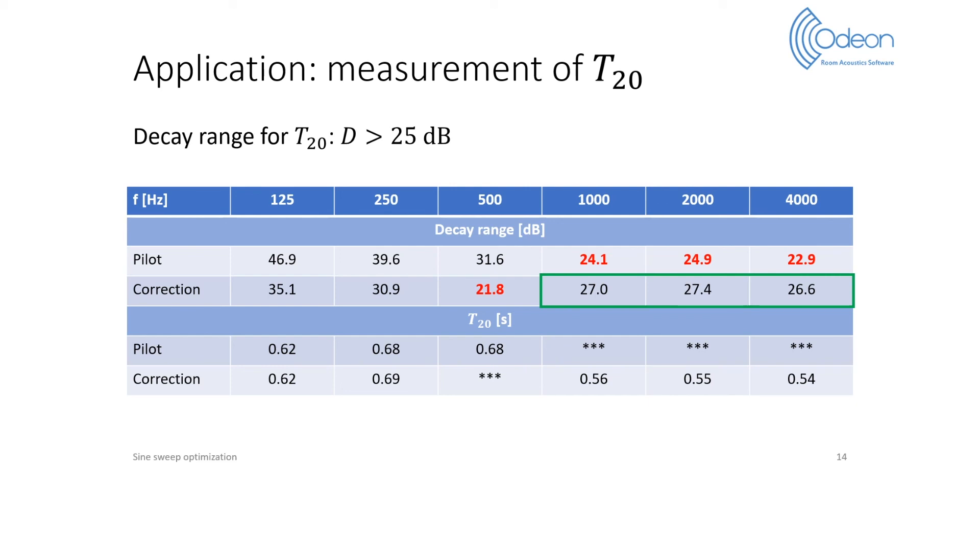After the correction, the decay range in these three bands is increased to about 27 dB, so it is now possible to calculate T20 there. At 125 Hz and 250 Hz, the correction leads to a considerable decrease in decay range, but it is still sufficient to properly estimate T20.